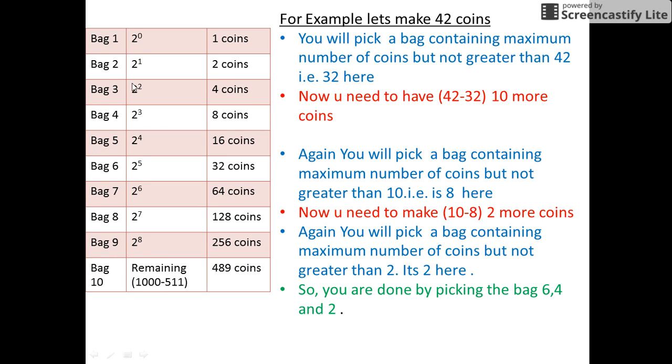by picking the bag number 2 having 2 coins, 4 having 8 coins, and bag number 6 having 32 coins, you can make 32 plus 8 plus 2 that is 42 coins. Stay tuned and keep watching.